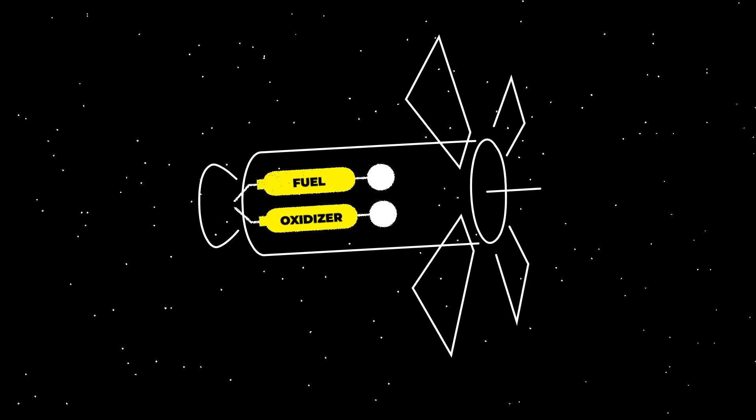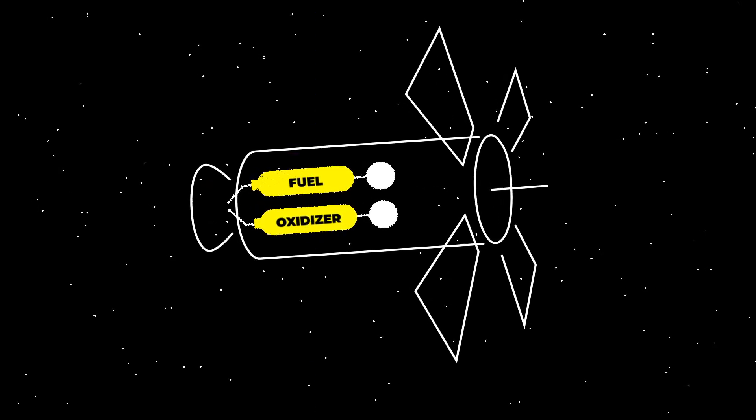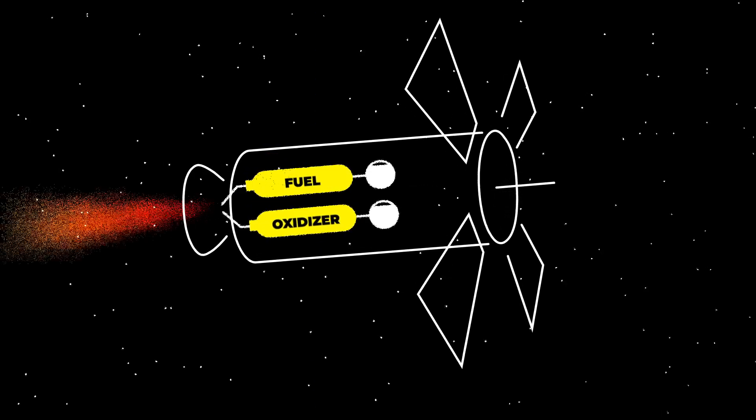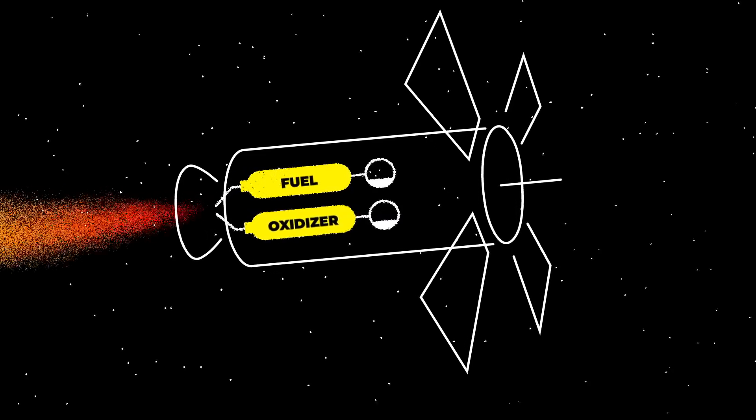There are chemical thrusters, or miniaturized rockets, that are harnessing a chemical reaction to energize and release fuel to generate thrust.